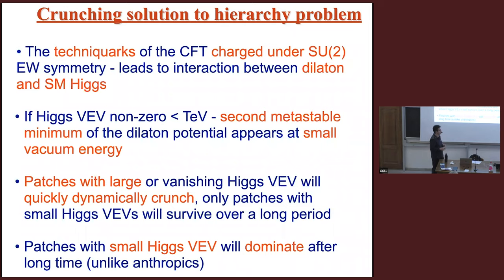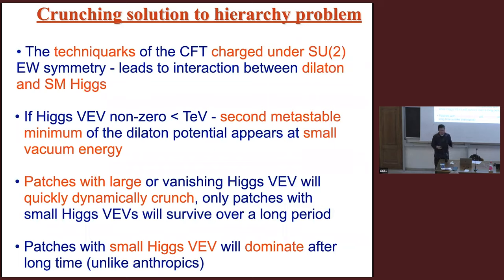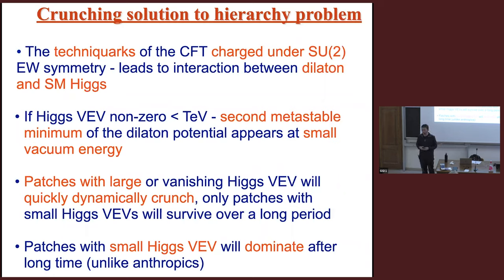That's the idea: patches with large Higgs VEVs dynamically crunch and vanish. After a long period of time, only patches with small Higgs VEVs survive. So after a long time, all remaining regions have a small Higgs VEV, and we don't need to resort to an anthropic argument.